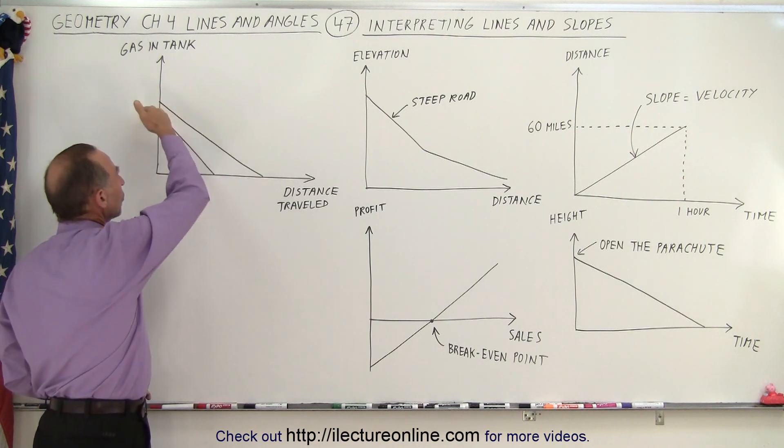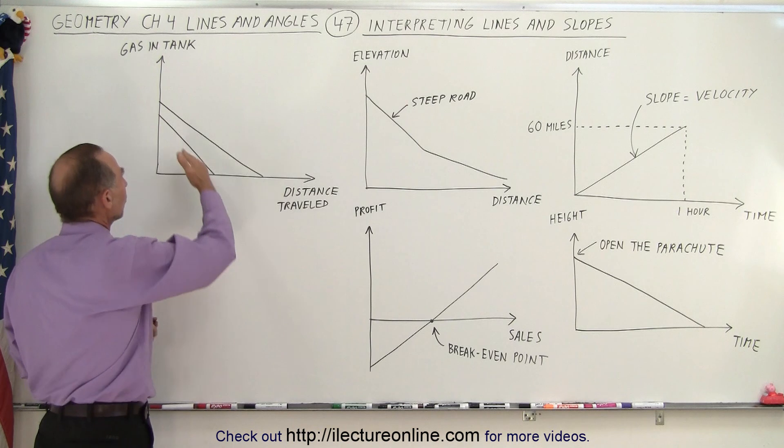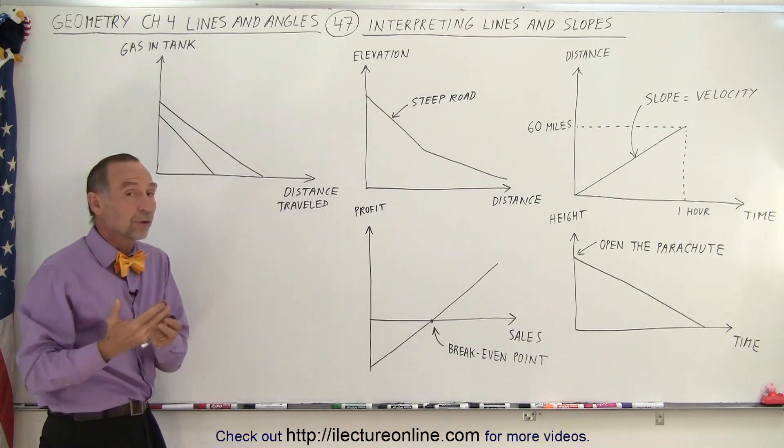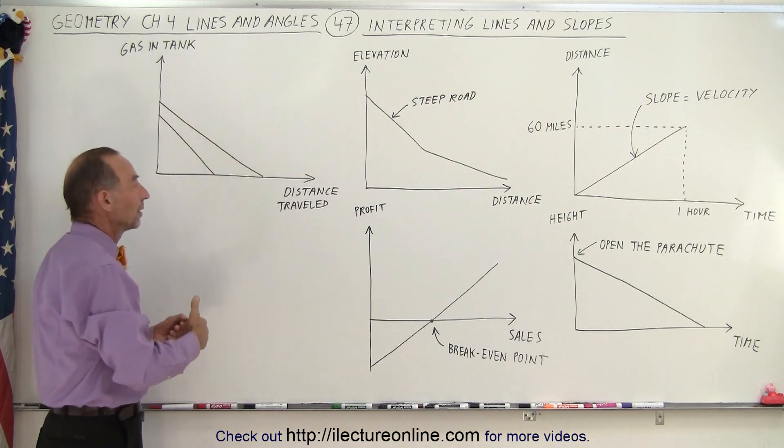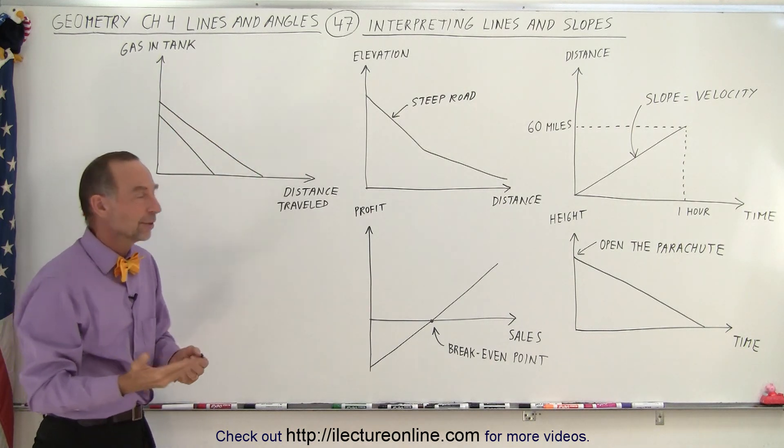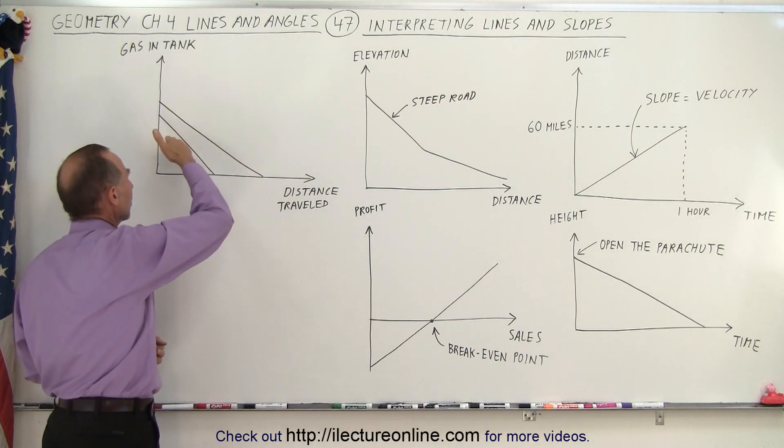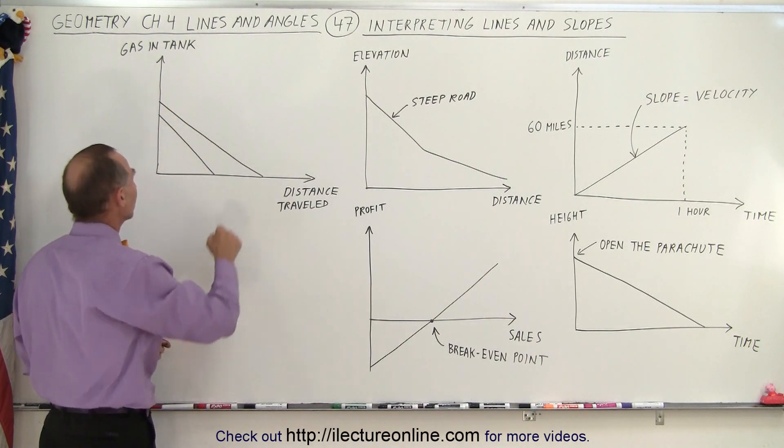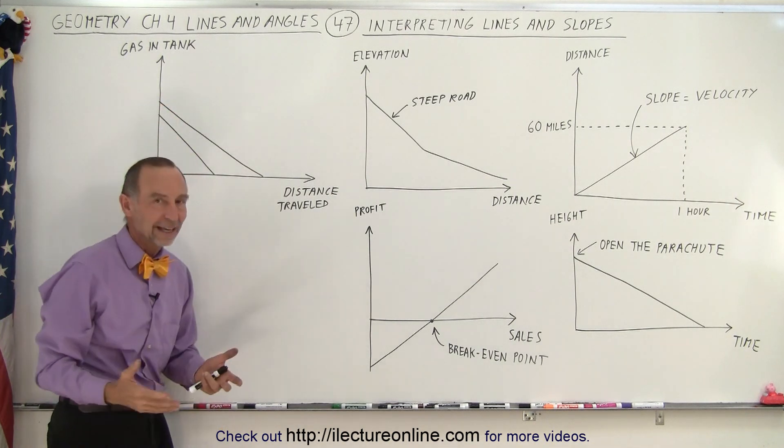Now the slope shows how much gas you use per distance traveled. The steeper the slope the smaller your gas mileage, the more gas you burn per mile covered. The less steep the slope the less gas you burn per mile covered. So you can see that this car here has a better gas mileage, this car here has not so good gas mileage, this car starts with more gas in the tank, this car starts with less gas in the tank.